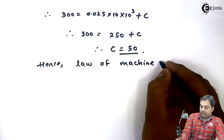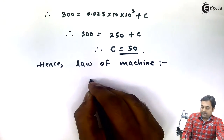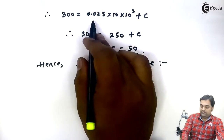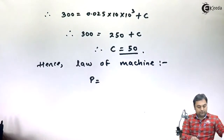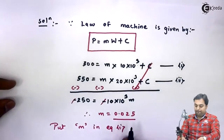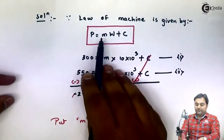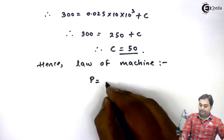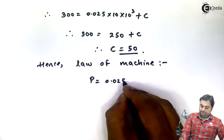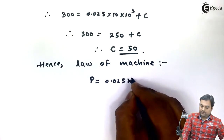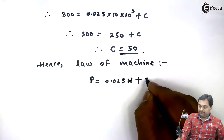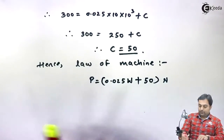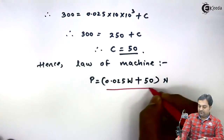Having found m and C, the law of machine is: P = 0.025W + 50 Newton. This is the first answer — the law of machine has been developed.